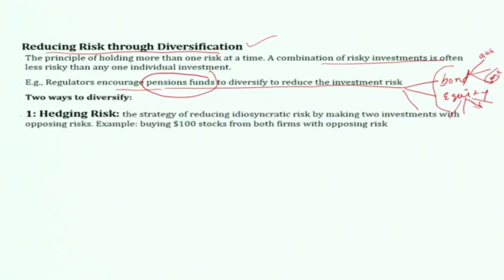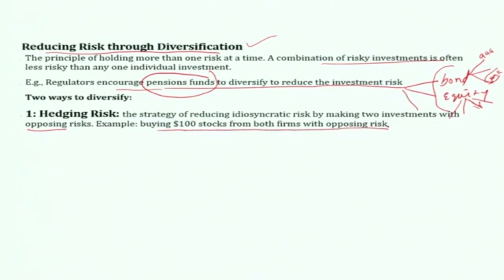There are two ways to diversify risk. The first is called hedging risk — the strategy of reducing idiosyncratic risk by making two investments with opposing risk. For example, an investment fund buys 100 stocks from two firms with opposing risk.